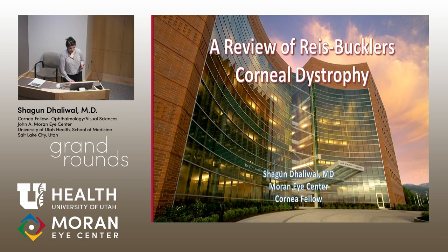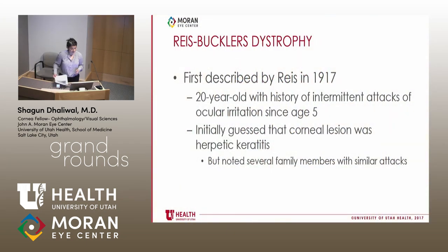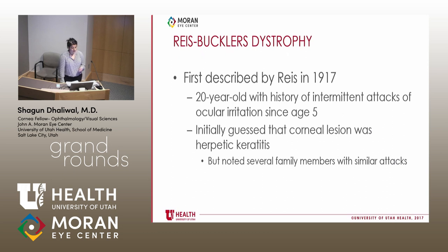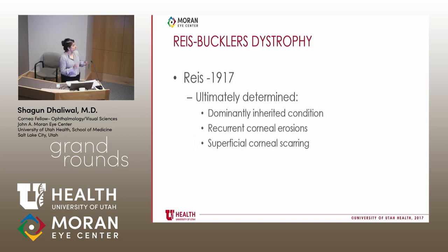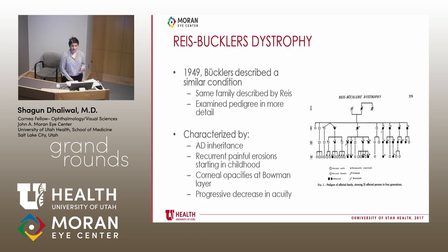Reis-Bücklers corneal dystrophy is an entity we don't often see in clinics, so I'd like to start with an overall review of what this disease is and how it came to be identified. This was initially described by Wilhelm Reis in 1917. He described a 20-year-old patient who had intermittent attacks of ocular irritation. Initially he thought this was recurrent herpetic keratitis, but when he examined the family pedigree, several other family members had similar attacks, leading him to determine it was a separate, dominantly inherited condition characterized by recurrent corneal erosions and superficial corneal scarring.